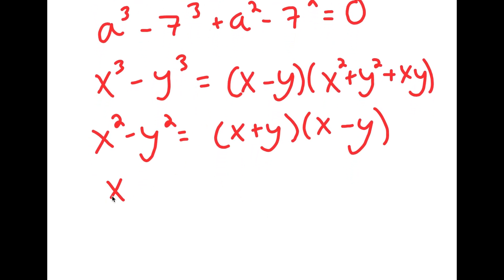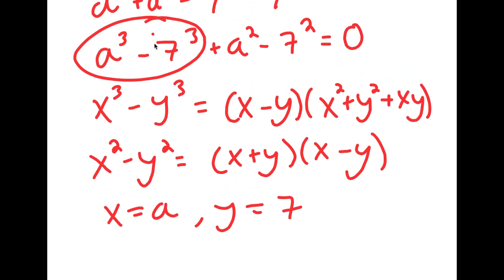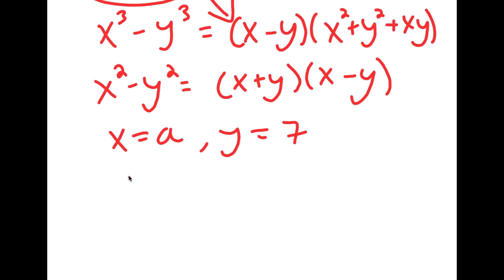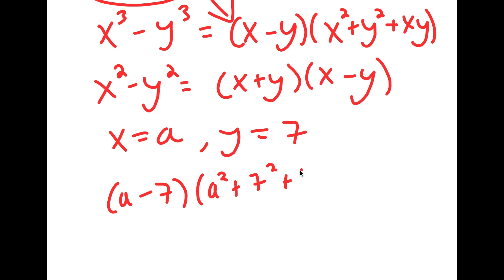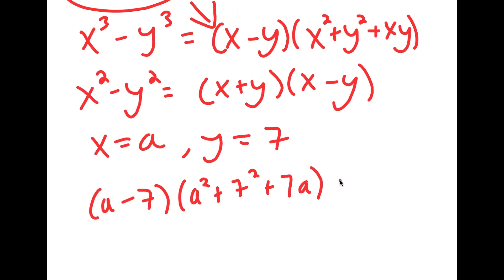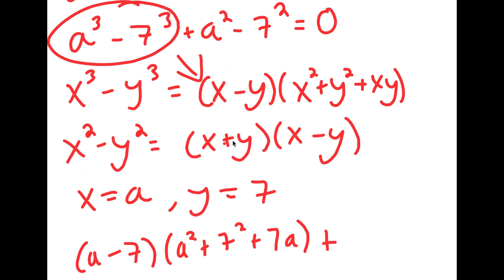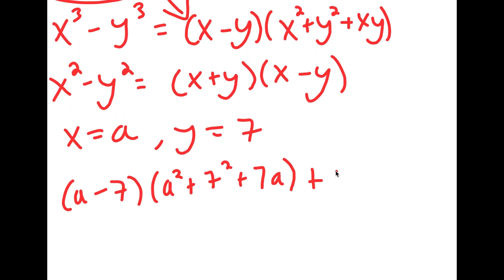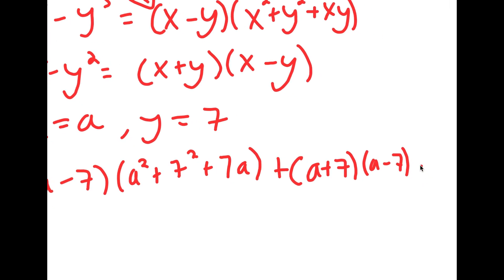In this case, x is equal to a and y is equal to 7. We're going to first rewrite a to the power of 3 minus 7 to the power of 3 in this form. So this is going to be equal to a minus 7 times a squared plus 7 squared plus 7a. And now for a squared minus 7 squared, this is x plus y times x minus y, which equals a plus 7 times a minus 7. And this is all equal to zero.